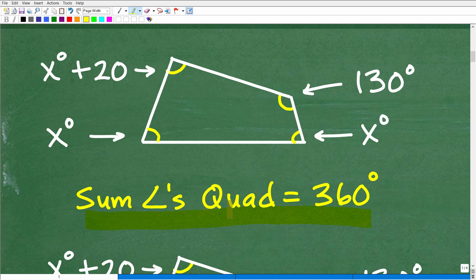Just like the sum of the angles in a triangle is 180 degrees, the sum of the angles in a quadrilateral, a four-sided polygon, is 360 degrees. In other words, this angle plus this angle plus this angle plus that angle will add up to 360 degrees.